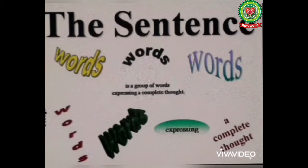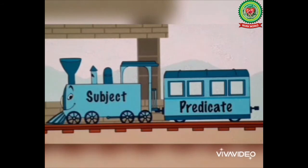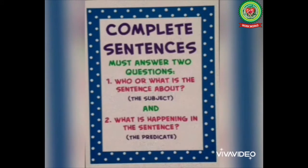Now I will tell you about the two parts of a sentence. A sentence has two main parts: number one, subject; number two, predicate. You should know that complete sentences must answer two questions: number one, who or what is the sentence about — that is known as the subject; number two, what is happening in the sentence — that is known as the predicate.